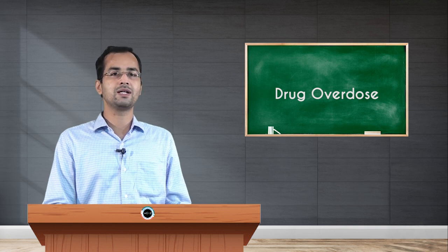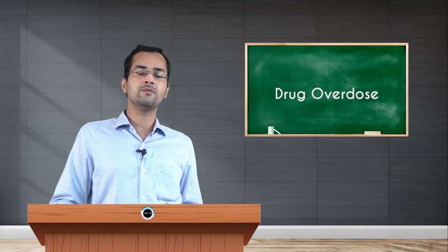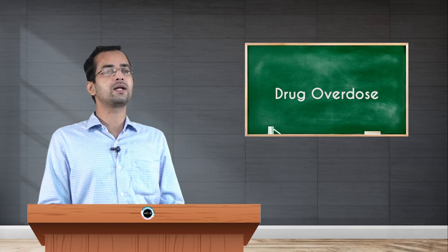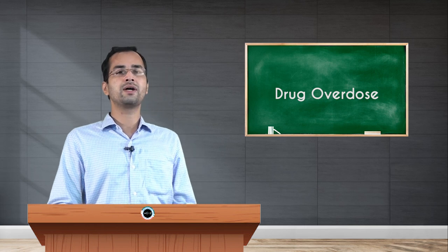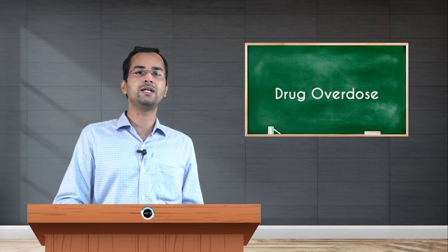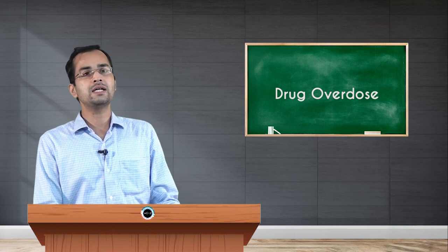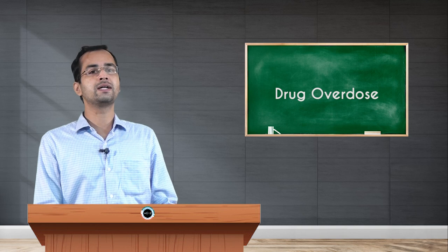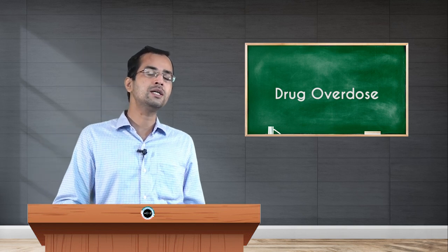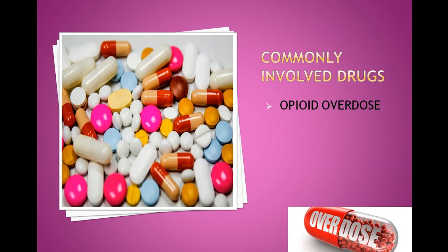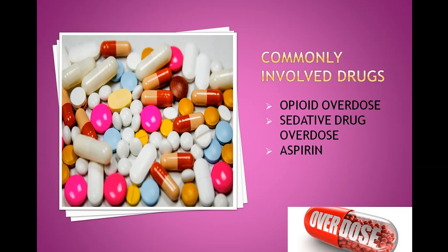The commonly involved drugs in overdose are those that are widely available, including over-the-counter drugs like paracetamol and aspirin, which can be purchased without a prescription. Because they are commonly available, people may take extra doses. Drugs that cause euphoria, such as opioids and sedatives, are also commonly involved because they are intentionally taken in excess.